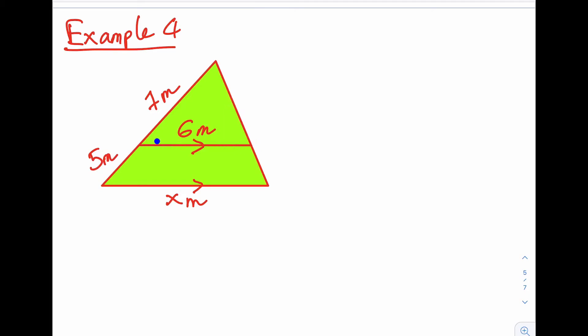which is similar because these angles will all be the same as these angles here. So we can draw that out as two separate triangles. So if I draw our small triangle first, then we would have 7 meters on one side and 6 meters on the other side. And then draw the same triangle, but bigger.